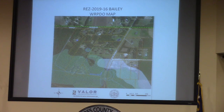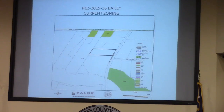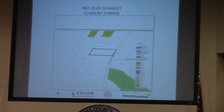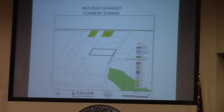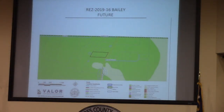Ms. Stevenson presented the staff report. This is a 2.5-acre tract split off from a 5-acre parcel. The remaining portion will be combined with the applicant's adjacent property to the south. The RA zoning is requested because the tract becomes non-conforming for its current EA zoning once the 5-acre tract is subdivided. TRC considered the request, had no objectionable comments, and staff has found the request to be overall consistent with the comprehensive plan.